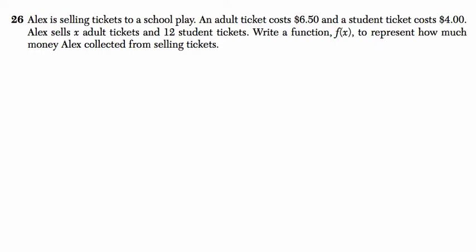Hello, welcome. Try this problem out, then press play. We'll solve it together. Alex is selling tickets to his school play. An adult ticket costs $6.50. I'm going to write this down as we go: $6.50 per adult ticket, and a student ticket costs $4.